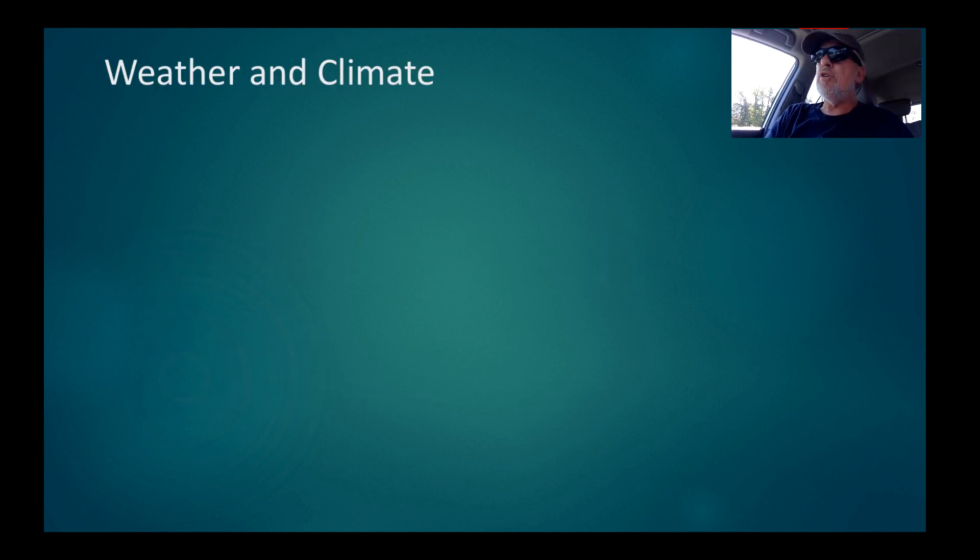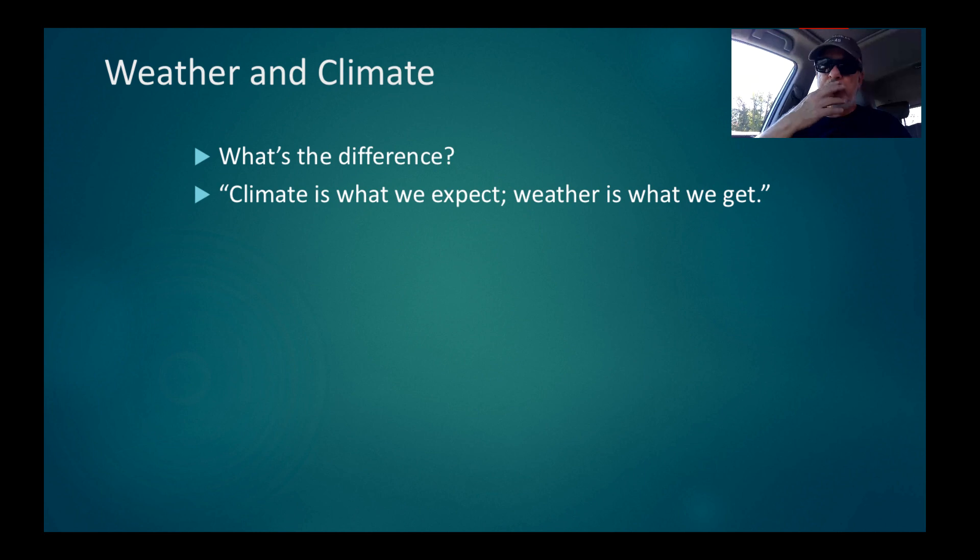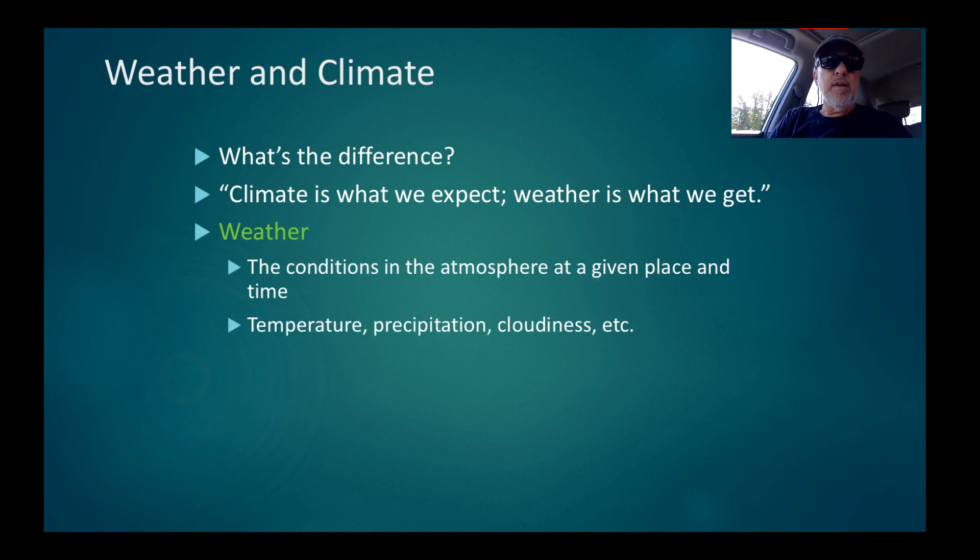Weather and climate, you have heard both of these words, but what do they mean and what is their difference? As the old expression says, climate is what we expect and weather is what we get. Weather are the conditions in the atmosphere at a given place and a given time. Today, it is hazy, hot and humid here in Richmond, Virginia, 90 degrees, probably 80% humidity, clear skies, thin cloud cover at best, no precipitation, light wind. So the temperature, the precipitation, the cloudiness, the relative humidity give you the weather.